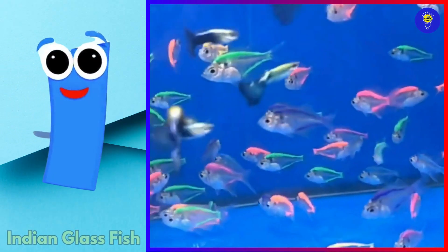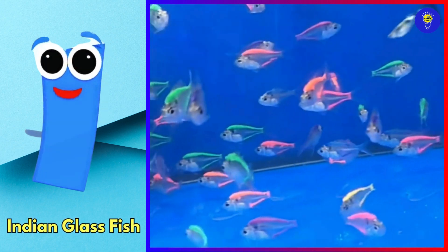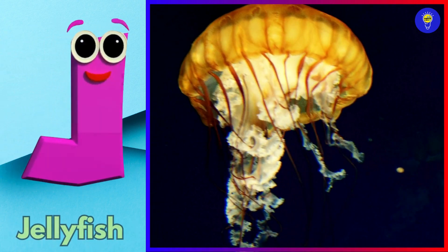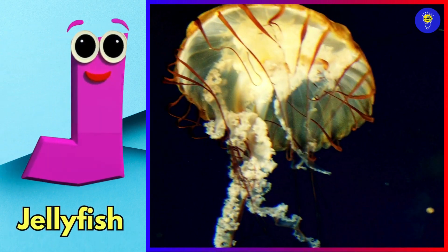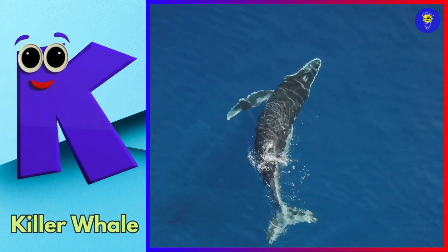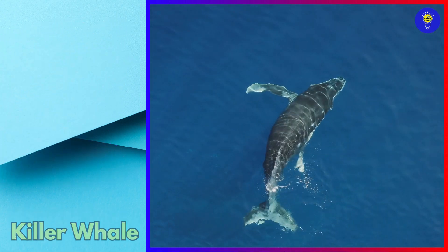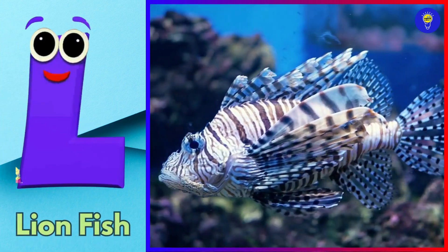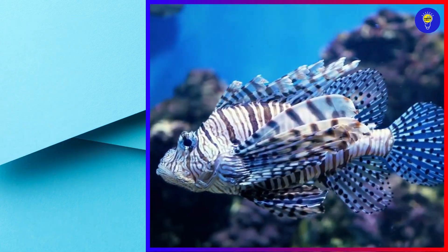I is for Indian glass fish. Indian glass fish. J is for jellyfish. Jellyfish. K is for killer whale. Killer whale. L is for lionfish. Lionfish.